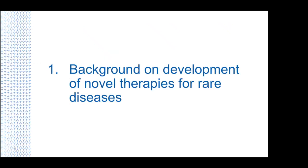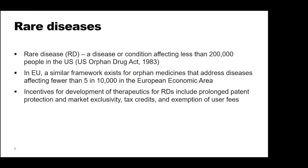Let us start with the background and development of novel therapies for rare diseases. First of all, what is a rare disease? It is important to acknowledge that there is no unique and universally accepted definition of a rare disease. In the United States, a rare disease is defined as a rare disease or condition affecting less than 200,000 people, based on the Orphan Drug Act of 1983. In Europe, a rare disease is defined as one that affects fewer than five in 10,000 people, or one in 2,000 people in the European Economic Area. There is also a category of ultra rare diseases, and these are often defined as affecting one patient per 50,000 people.